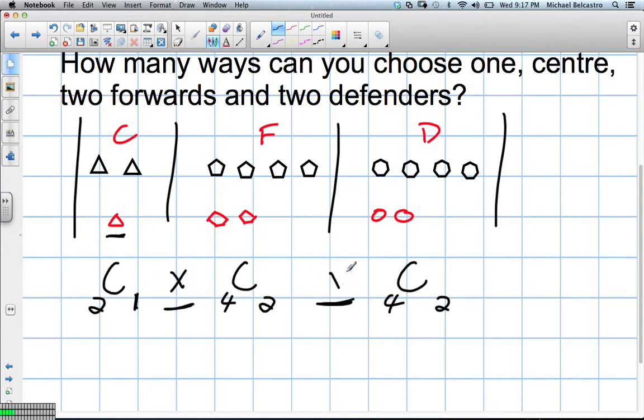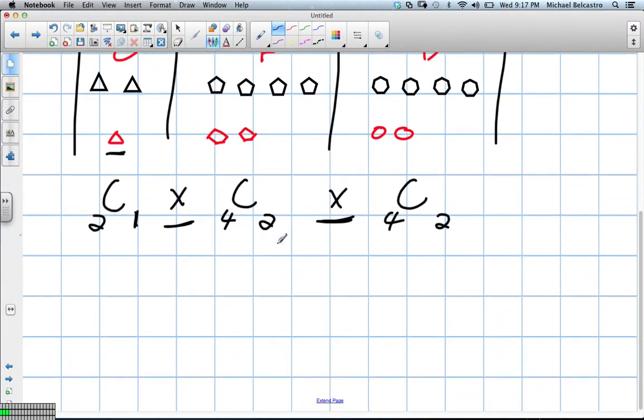And it's going to be multiplication between them, and we've got to think of the reasoning why. Well, the reasoning why, we're just going to quickly calculate. This combination ends up being two, this one ends up being six, and this one ends up being six.